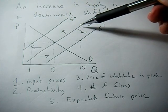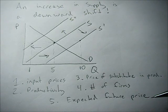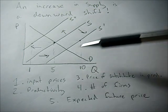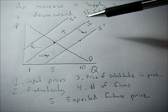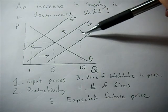So what could cause an increase in supply? Well, it's a change in one of the determinants of supply. Input prices could go down, that would cause an increase in supply. Productivity or technology could go up, an increase in supply.